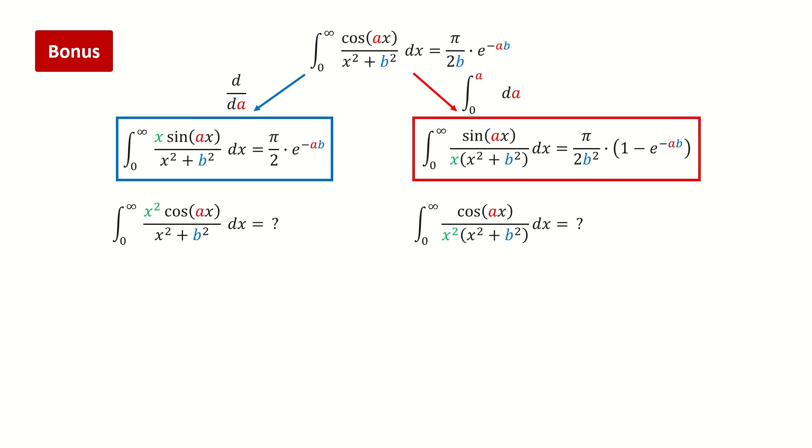Actually, we can see a nice pattern here. Whenever there is a sine function on the numerator, the power index for this green colored x will be an odd integer. And whenever there is a cosine function on the numerator, the power index for this green colored x will be an even integer.